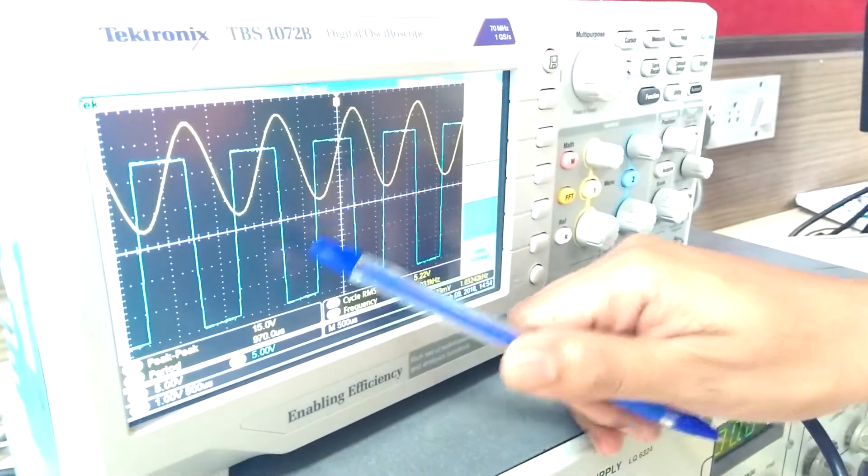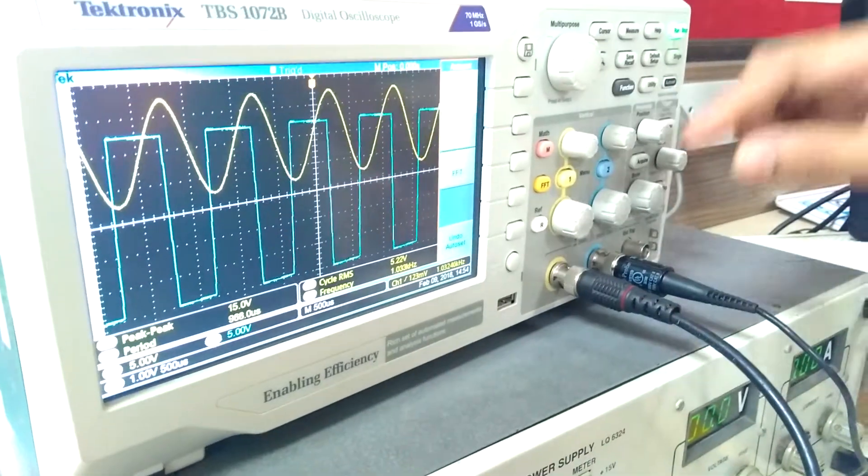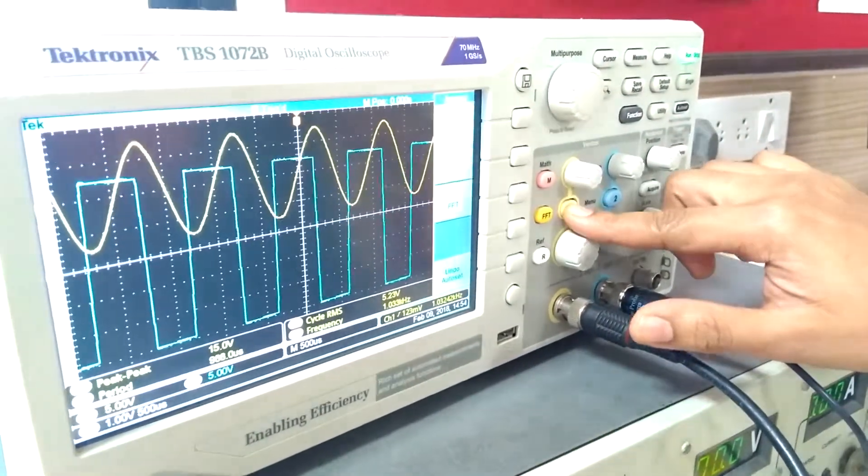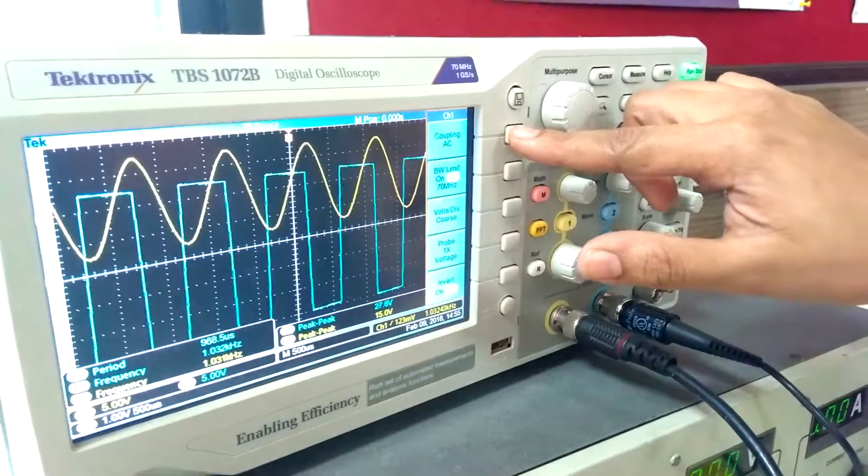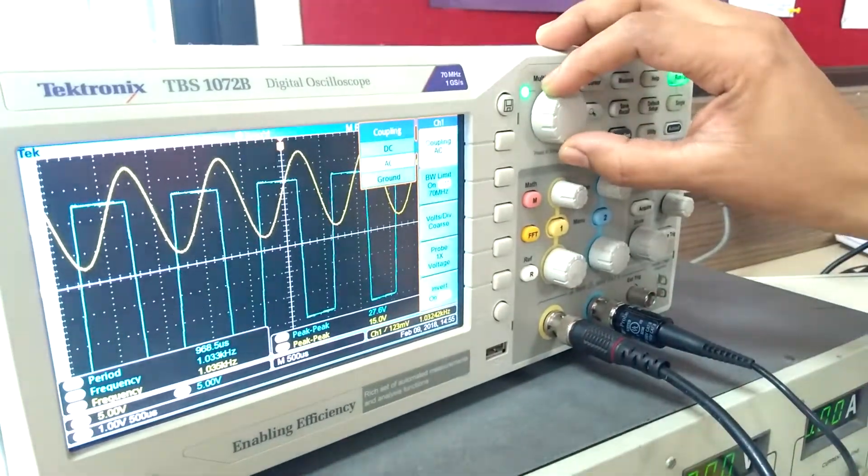Now we have to measure UTP and LTP on DSO. For that, first press channel 1, coupling convert AC to ground.